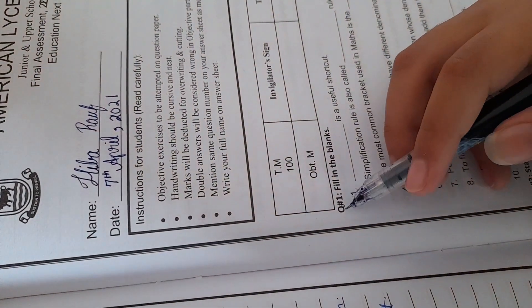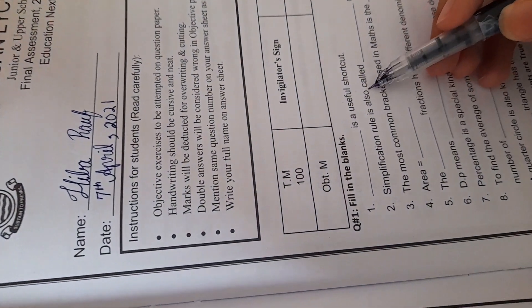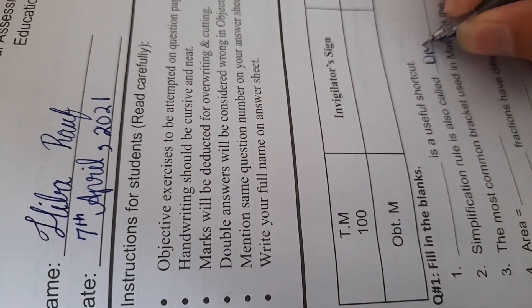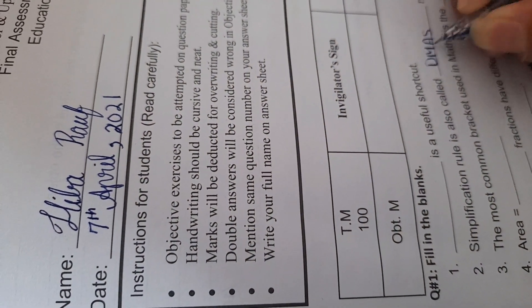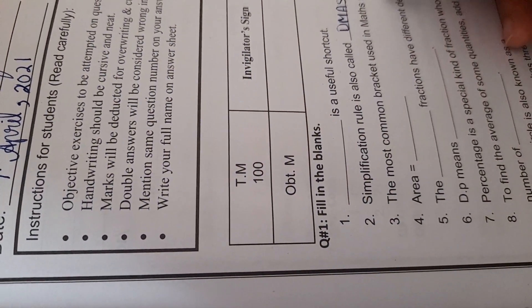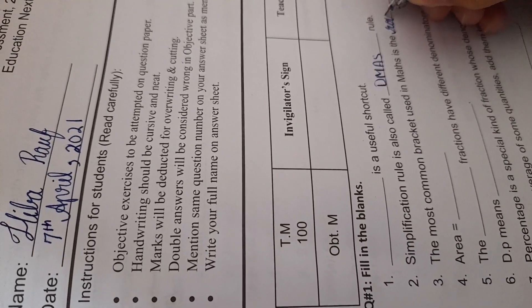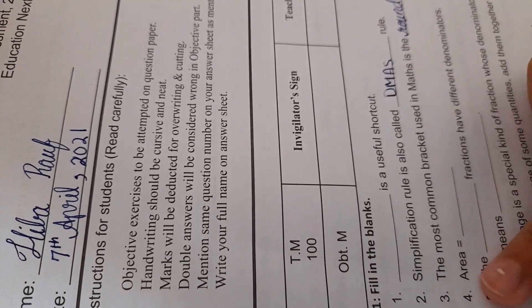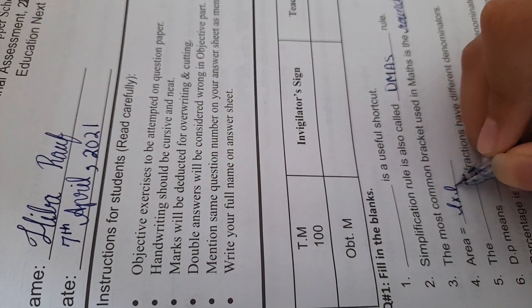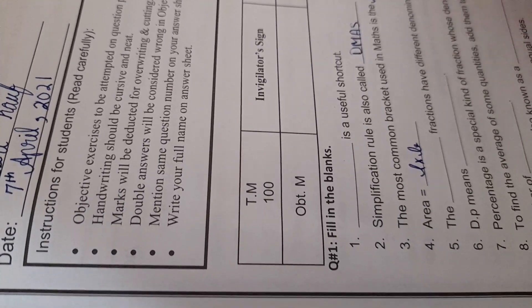First of all, we have question number one, fill in the blanks. The simplification rule is also called DMAS rule. The most common bracket used in math is the round bracket. Area equals length multiplied by breadth. The dash fractions have different denominators, unlike.